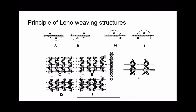We discussed about the two basic principles of leno weaving. Either the standard yarn can form the top shed or the standard yarn can form the bottom shed. In this case, the standard yarn is forming the bottom shed and the crossing yarn is forming the top shed, whereas in these two diagrams the standard yarn is forming the top shed and crossing yarn is forming the bottom shed.